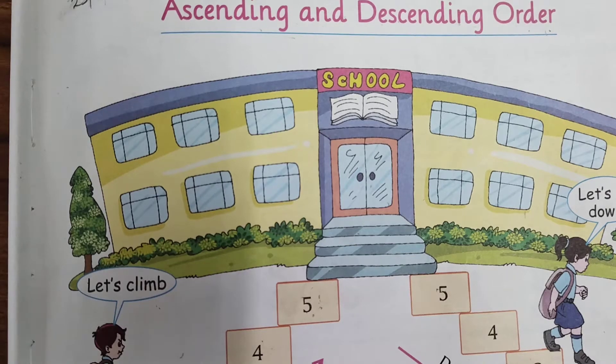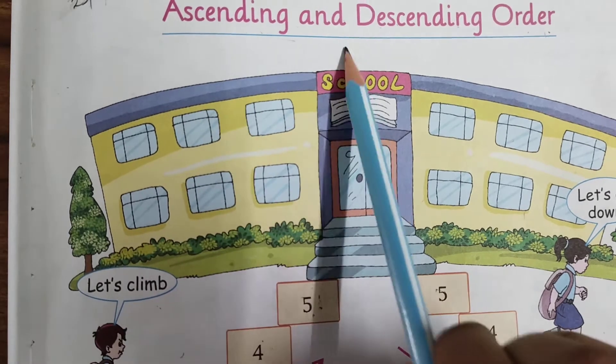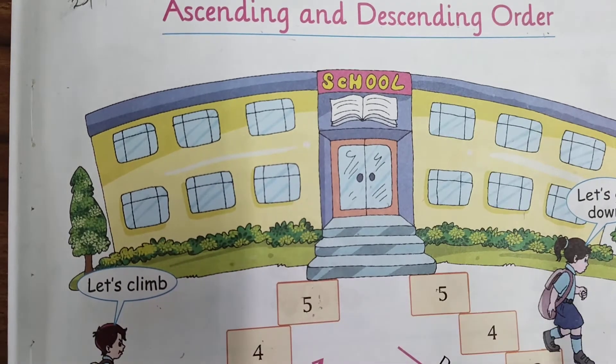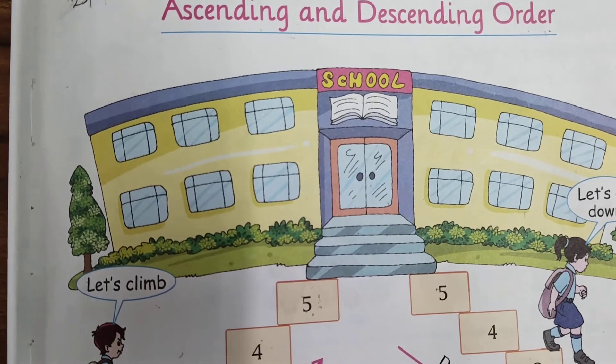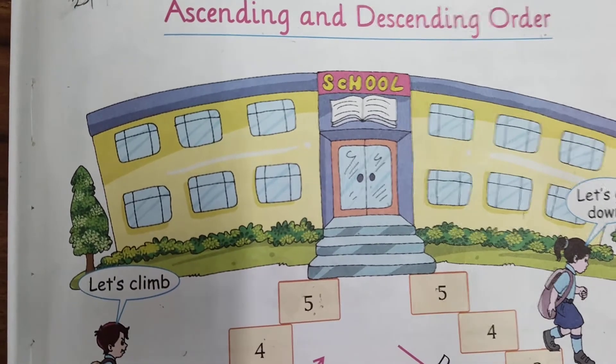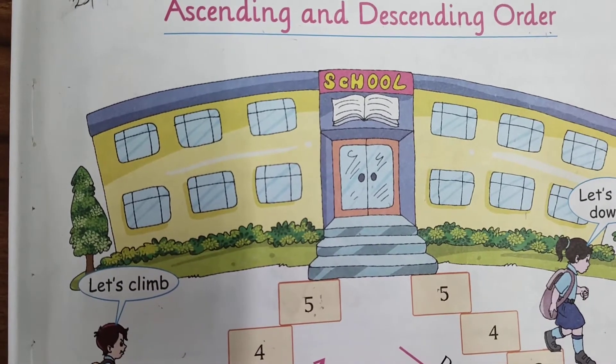Hare Krishna dear students, today our topic is ascending and descending order. Ascending means bhadde kram mein, and descending means ghadde kram mein.